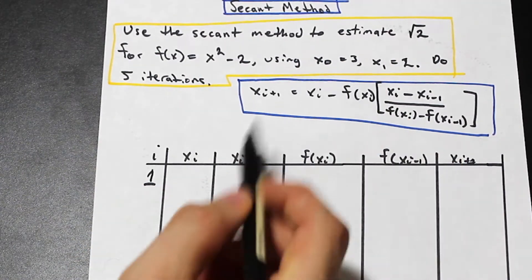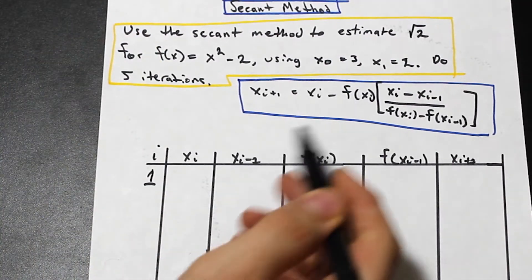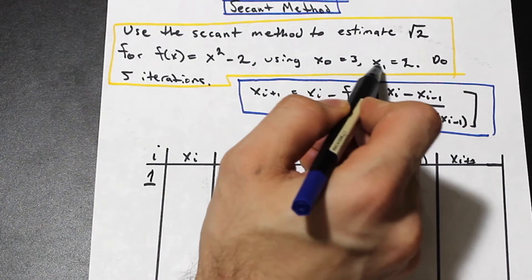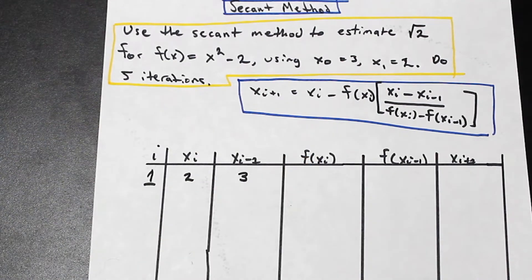So our first guess—this is what was our guess before and what's our guess currently. So the current guess is xi, that's 2, and then the iteration before that was 3.